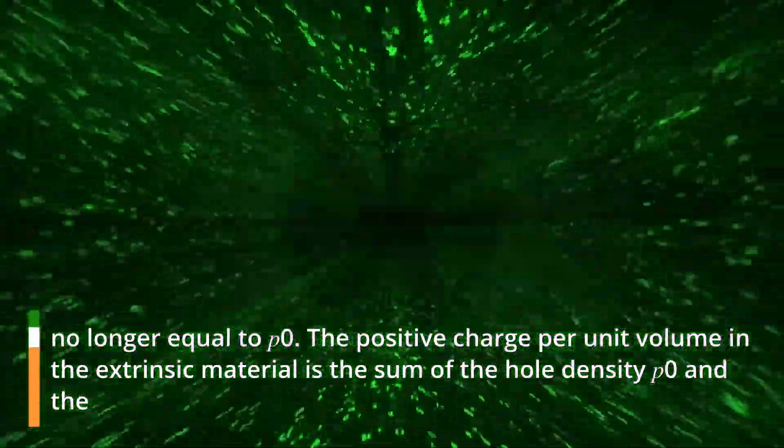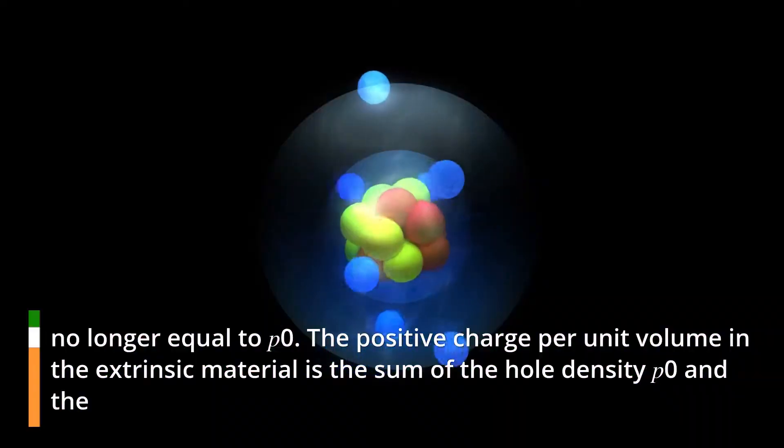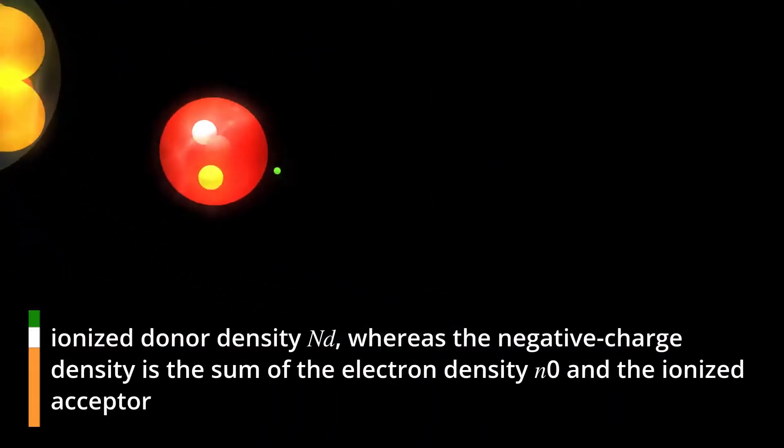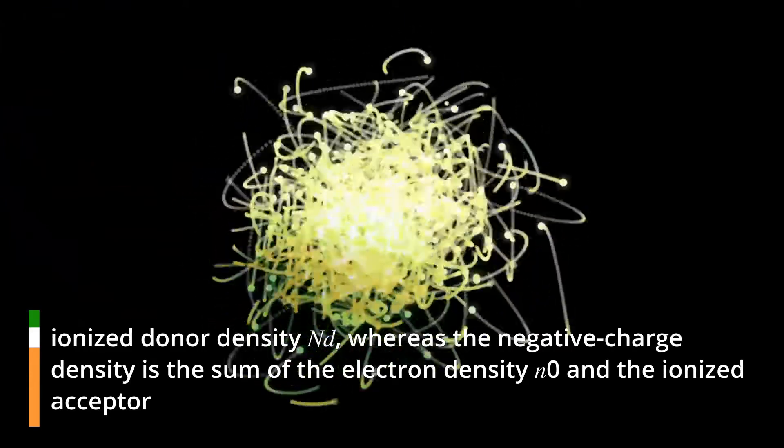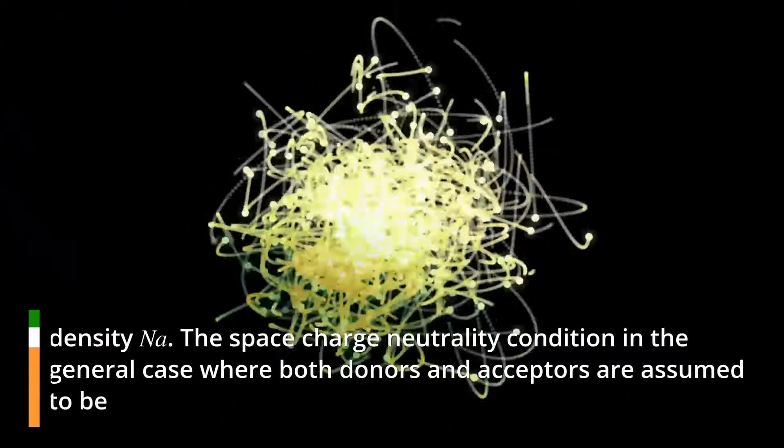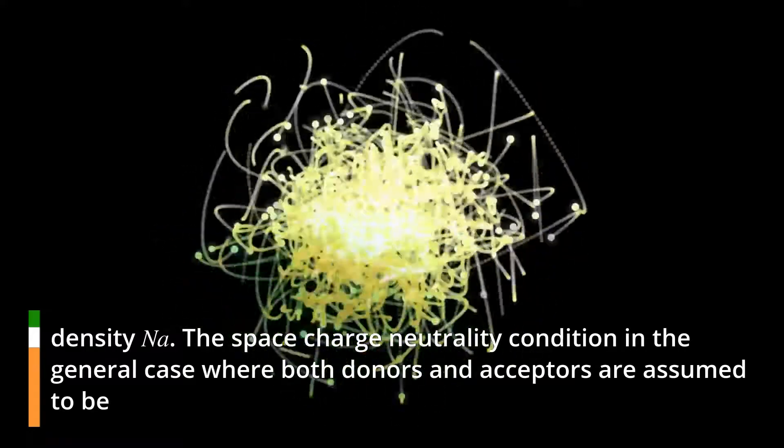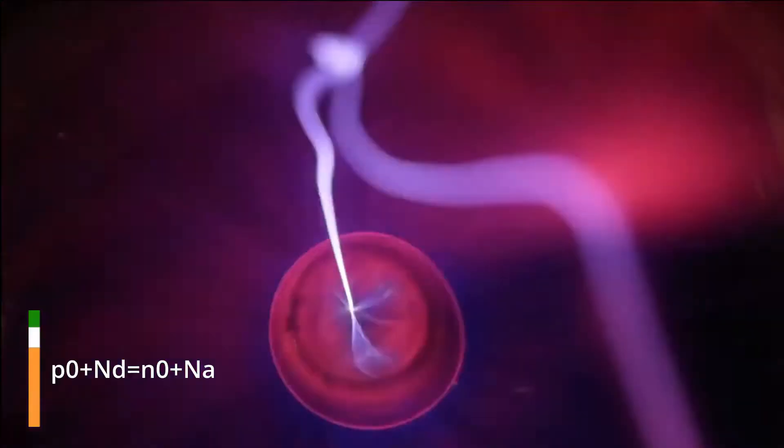The positive charge per unit volume in the extrinsic material is the sum of the hole density P0 and the ionized donor density Nd, whereas the negative charge density is the sum of the electron density N0 and the ionized acceptor density Na. The space charge neutrality condition in the general case where both donors and acceptors are assumed to be P0 plus Nd equals N0 plus Na.